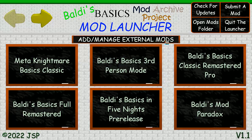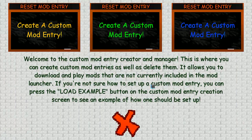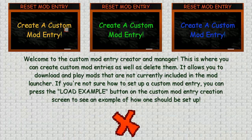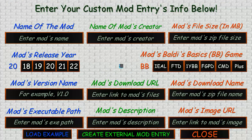First, click on 'Add / Manage External Mods.' You will see this screen. If you have not created a mod, if you already have, this text will say the name of your mod instead of just this. Since we're creating a new one, click on the first one. If you already entered one, just click on any of these that are like this.